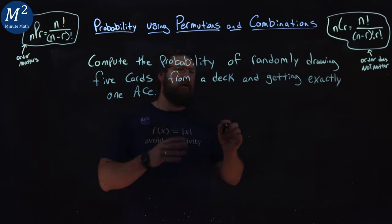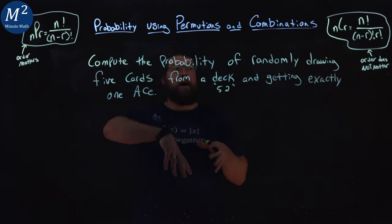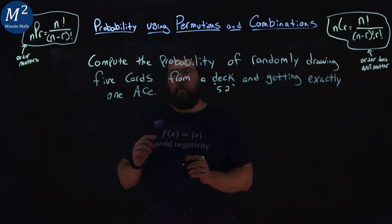Remember from a deck of cards, there are 52 total cards, and we're drawing five randomly from them. From there, we want to get exactly one ace.